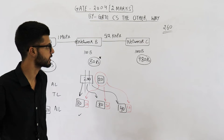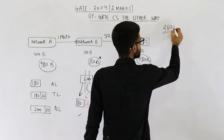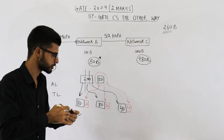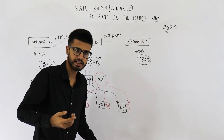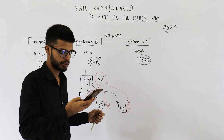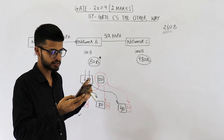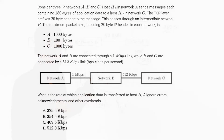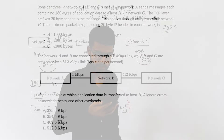That is what they were asking — so 260 bytes is the answer to part A of this question. Now I am going to read the next part and then explain its solution. The next part says: what is the rate at which application data is transferred to host HC? Ignore errors, acknowledgements and other overheads.